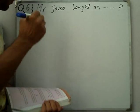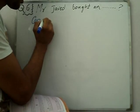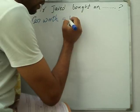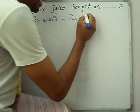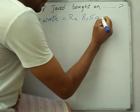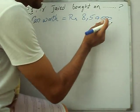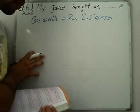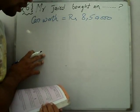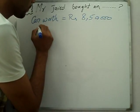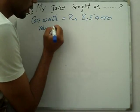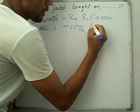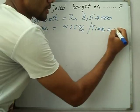Car worth — gari ki kimat kitni hai? 8 lakh 50 thousand. Rate kitna given hai? 4.25% for 3 years. So rate is 4.25% and time kitna hai? 3 years.